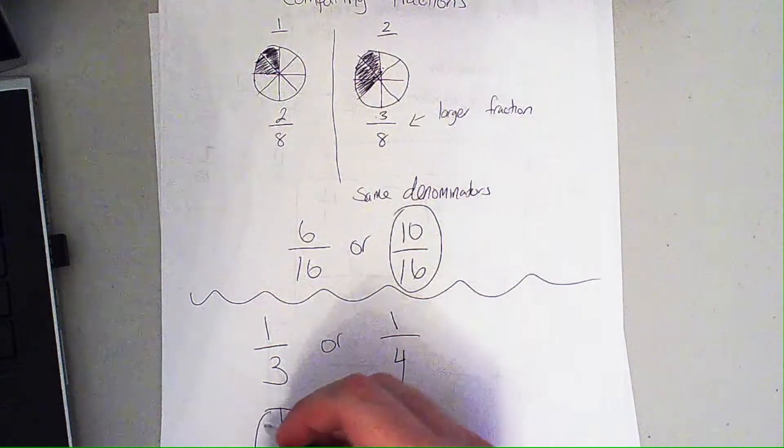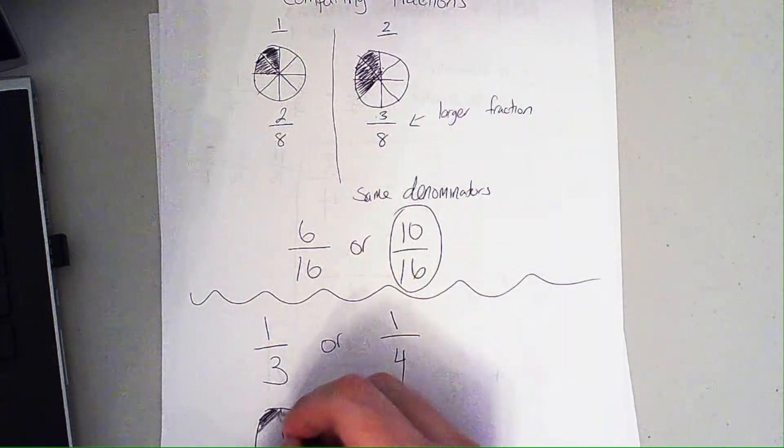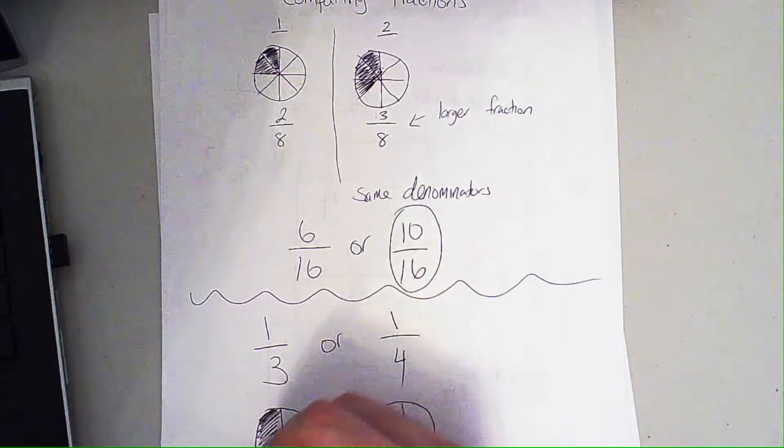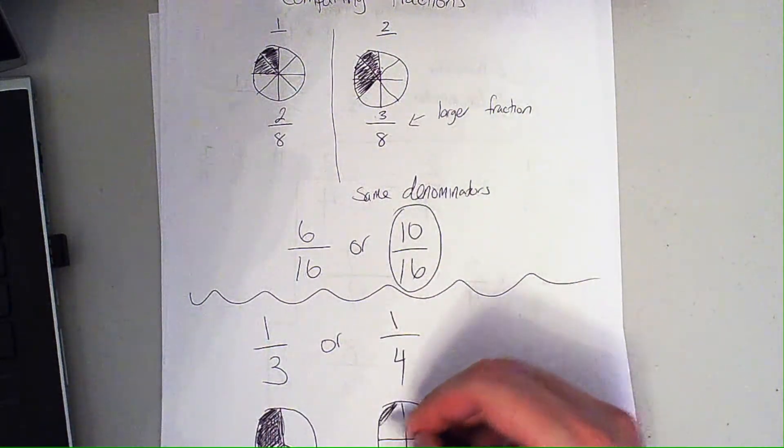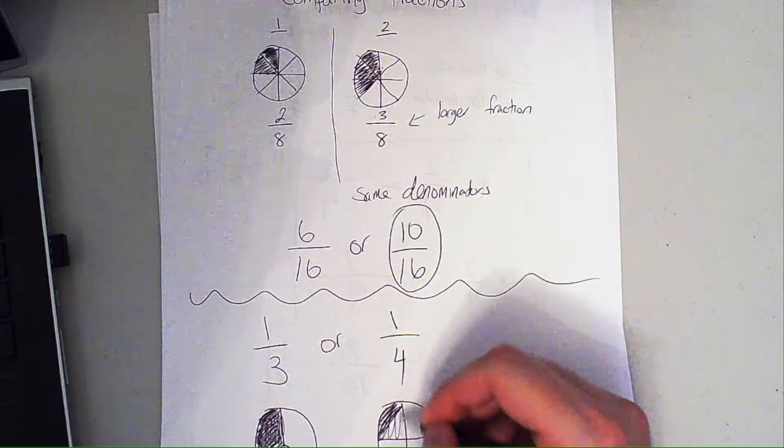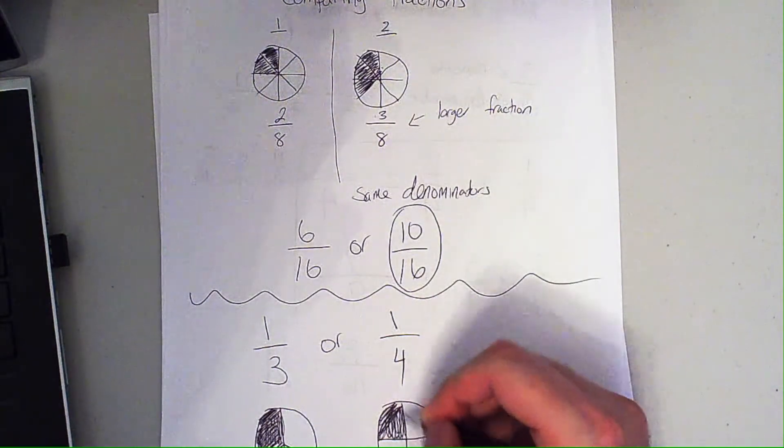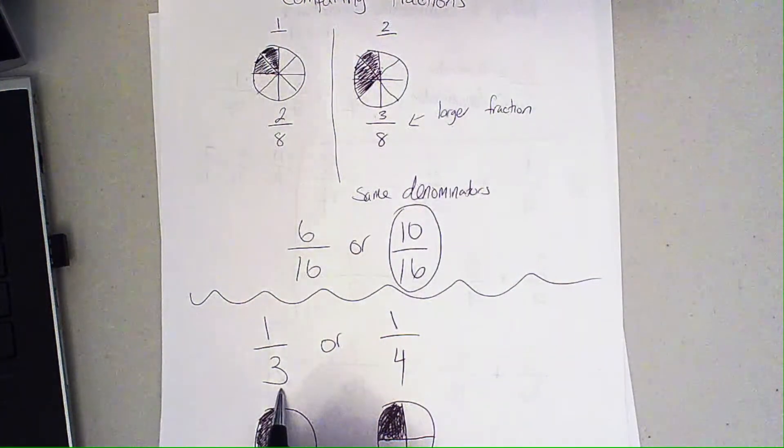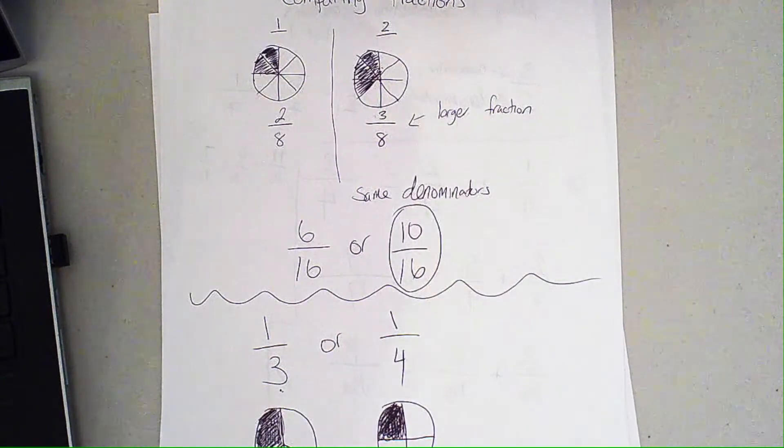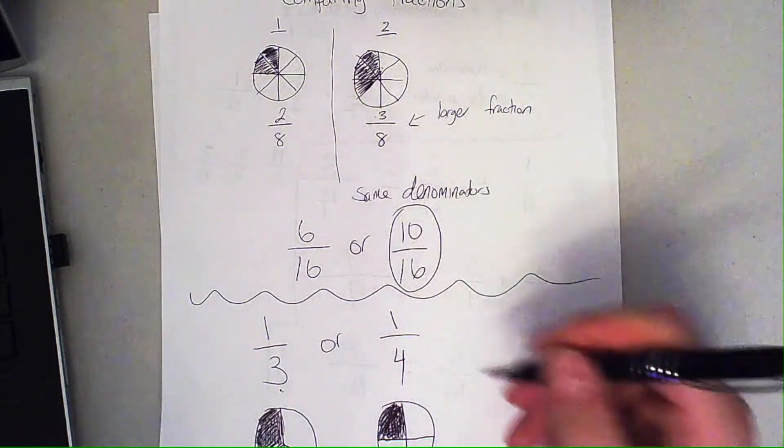Let's shade in what's being represented here, which would be 1/3, and this is 1/4. In this case, because the number is smaller, the fraction is actually bigger because it is cut into bigger pieces. So the smaller denominator has bigger pieces.